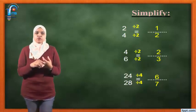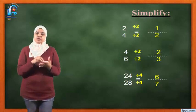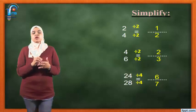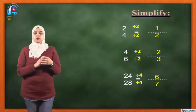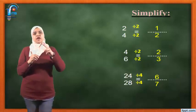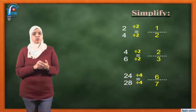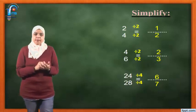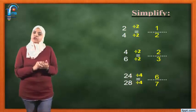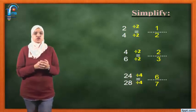Is 2 and 4 in table 2? Yes. Is 2 and 4 in table 3? No. In table 4? Just 4, not 2. So we're going to use table 2, because 2 and 4 are both together in table 2. So divided by 2 up and divided by 2 down.